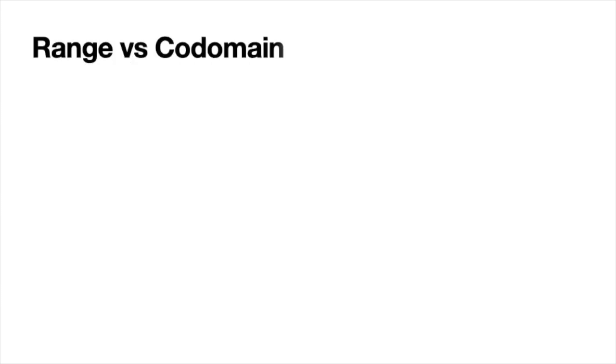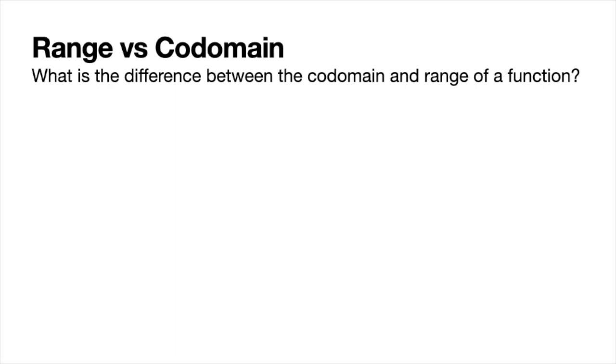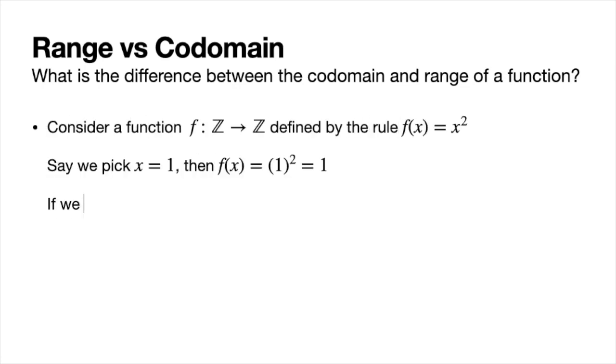A natural question. What is the difference between this codomain and range? Let's say that we have some function. We're going to name it f, and it's going to start from the integers and go to the integers. That's what that fancy little zed means. And it's defined by this rule, f of x is equal to x squared. Let's say that we pick x is equal to 1, and put that through our function. What our function does is it squares it, and then spits out our answer. 1 squared is 1. If I put a negative 1 and I square it, I get the same output.